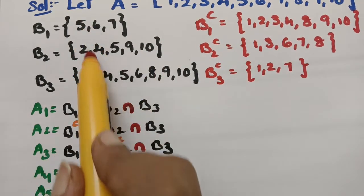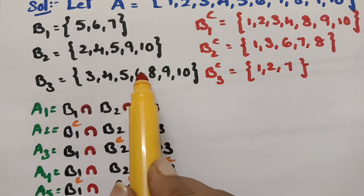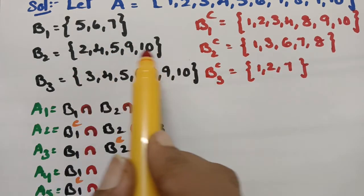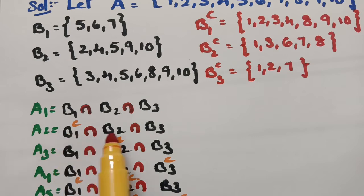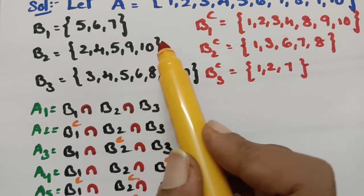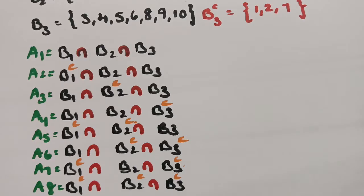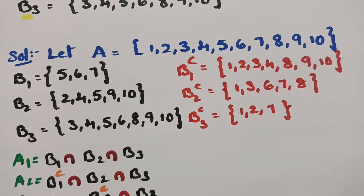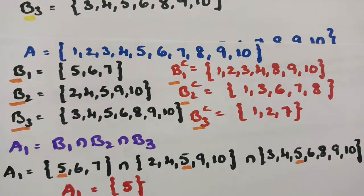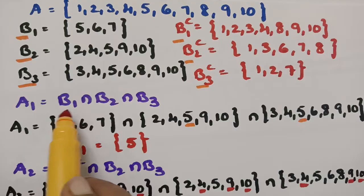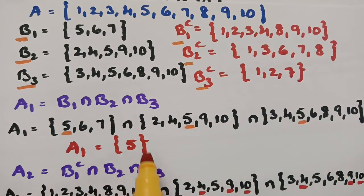Now, intersection means common elements. For A1 = B1 ∩ B2 ∩ B3: checking B1={5,6,7}, B2={2,4,5,9,10}, B3={3,4,5,6,8,9,10} — 5 appears in all three, 6 is not in B2, 7 is not in B2 or B3. Therefore A1 = {5}. For A2 = B1_complement ∩ B2 ∩ B3, the common elements are 4, 9, 10.